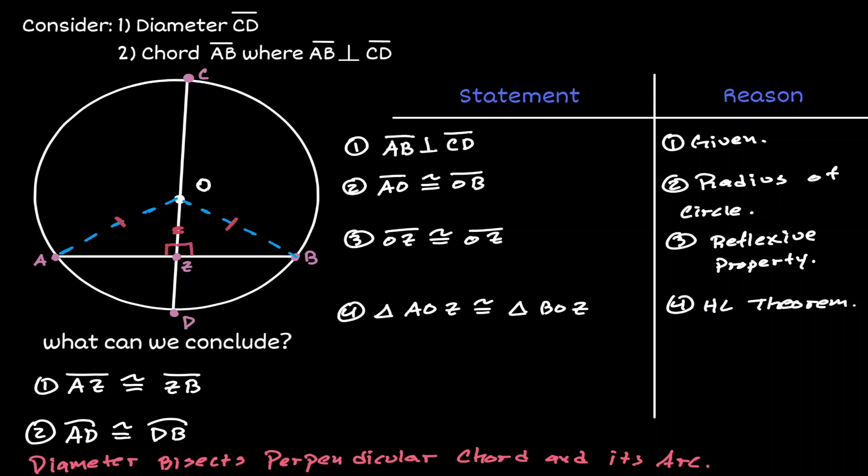Then we can say that corresponding parts are congruent to each other and the corresponding part of line segment AZ in the other triangle is the corresponding part ZB, which is the first conclusion that we draw.